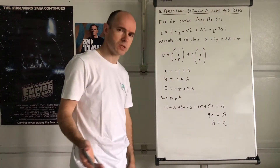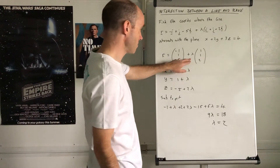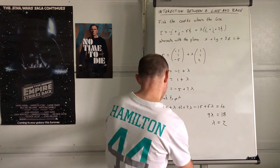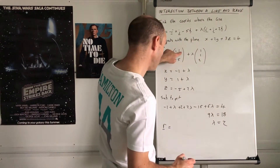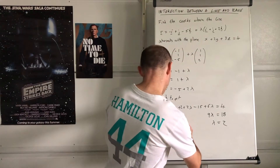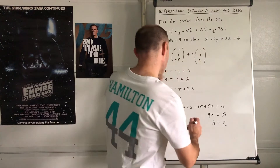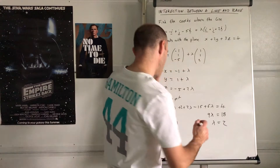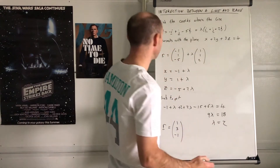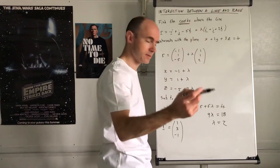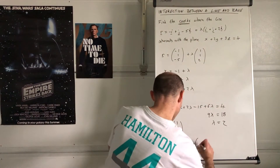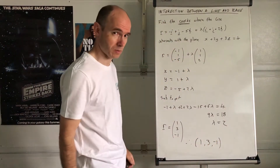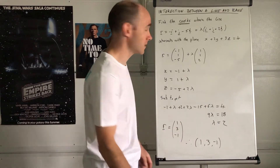So λ = 2. What do you do with that? Put it into the line equation. The value of r gives you the position vector of a point on the line: r = (-1+2, 1+2, -5+4) = (1, 3, -1). That's the position vector. The question asks for coordinates, so write down the coordinates: (1, 3, -1).